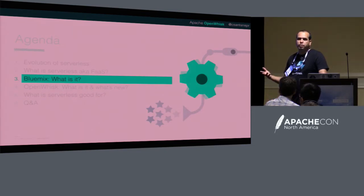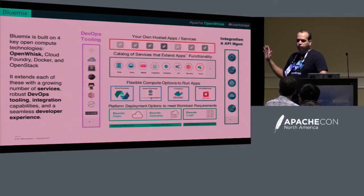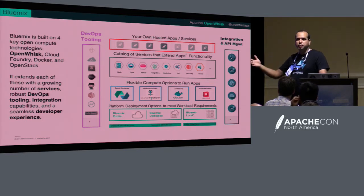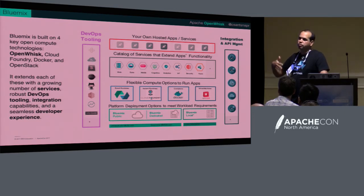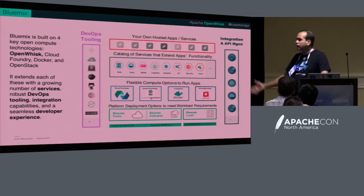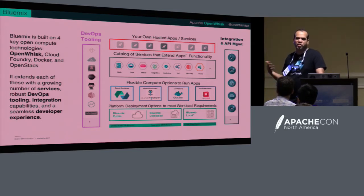Bluemix is the IBM cloud platform. We have many services, but it breaks down in terms of compute starting with serverless, which is OpenWhisk. We run OpenWhisk on our platform. Then you have platform as a service based on Cloud Foundry, containers, and VMs. So you have a spectrum of building different applications in a single cloud, taking advantage of — I think last count was 150 different services — from cognitive IoT, Watson, NoSQL databases, and different services. But today we're going to concentrate on the open source project.